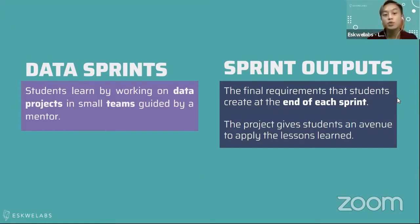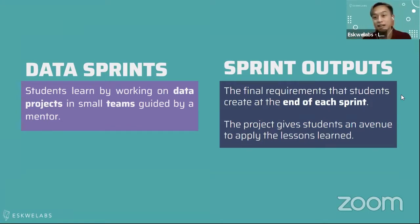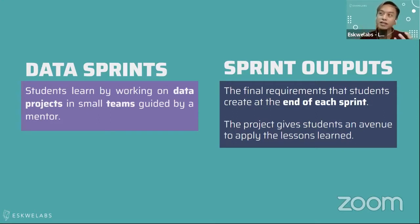Data sprints are essentially a setup where students will be working in small teams — teams of three, four, or five. The idea is you will be working with other people and building a project, with an output at the end of every two weeks, which we refer to as a sprint output. All sprint outputs also become a final requirement, so you are challenged and pushed to apply what you've learned almost immediately. Through this process, you understand more clearly what you've understood and what you don't.